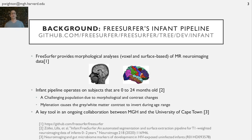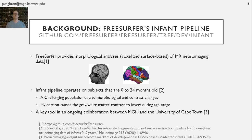Let me back up a bit. I work in the neuroimaging lab that releases FreeSurfer, a software package that provides morphological analyses of neuroimaging data. For example, you give it an MRI like the one on the left, and it will segment the brain into various structures and compute a bunch of statistics.